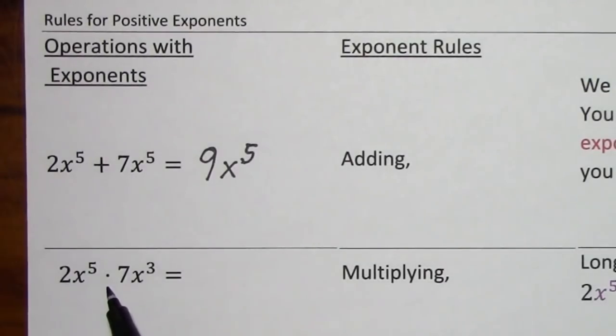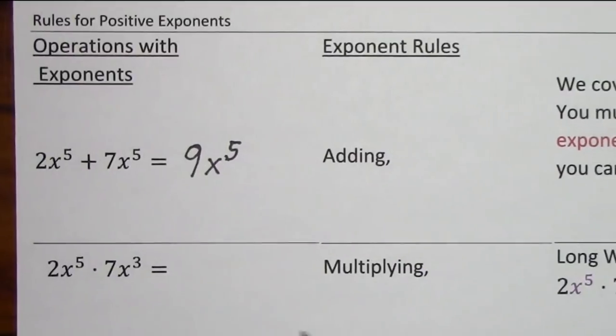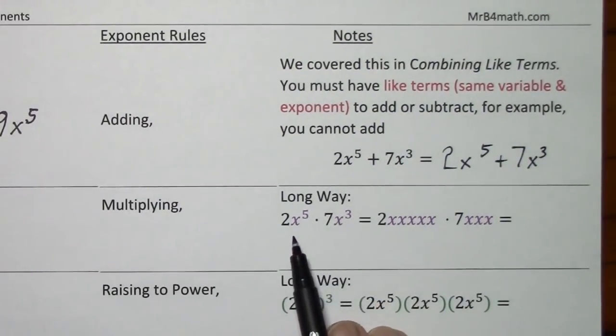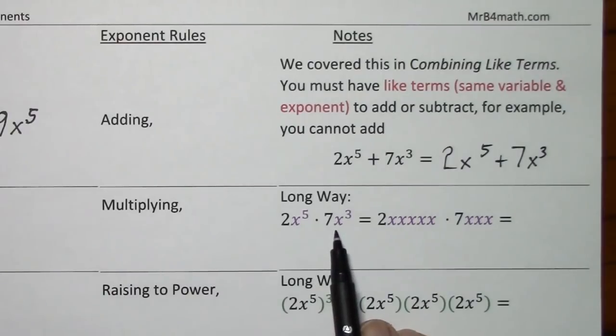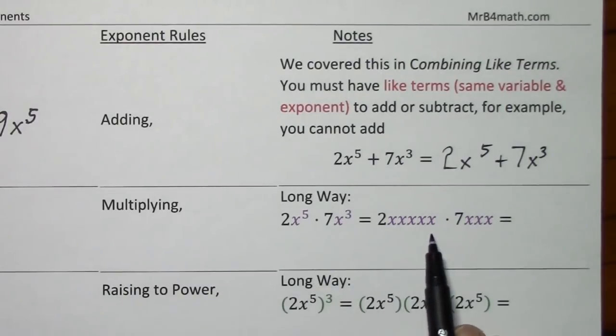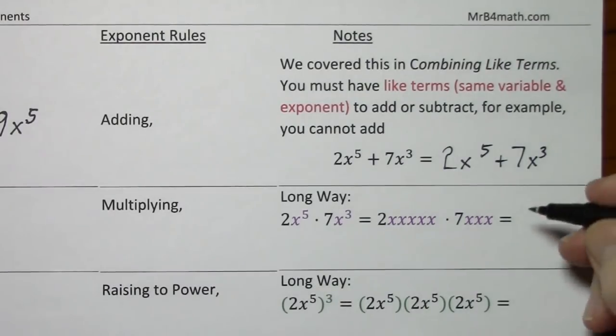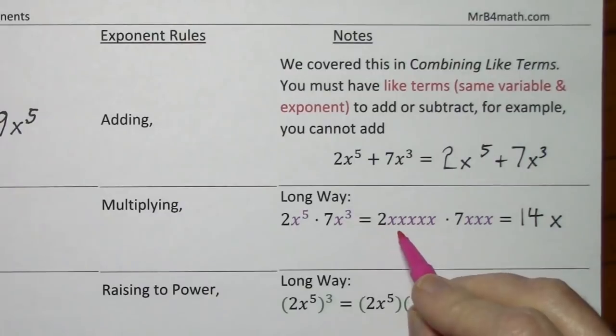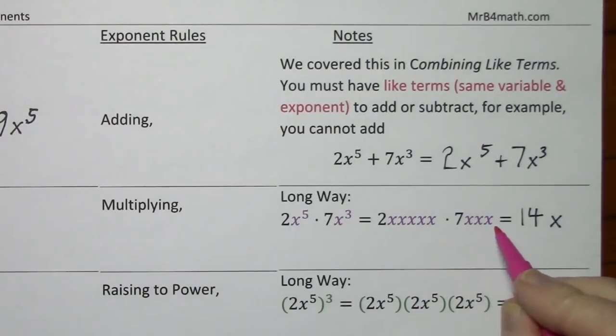Looking at the next case, we have multiplication. First, I'll look at the long way. 2x to the fifth times 7x to the third can be written out in this manner. This would give us 14x to the 1, 2, 3, 4, 5, 6, 7, 8.